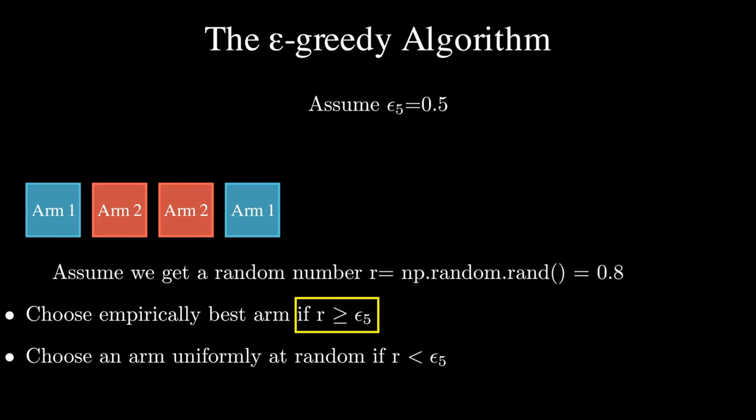Therefore, this time we need to choose the empirically best arm. How do we find the best arm? Let's assume that in the previous four rounds we played arm 1 gives us a reward of 0.9, arm 2 gives us 0.5, and then arm 2 gives us 0.3, and then arm 1 gives us 0.7.